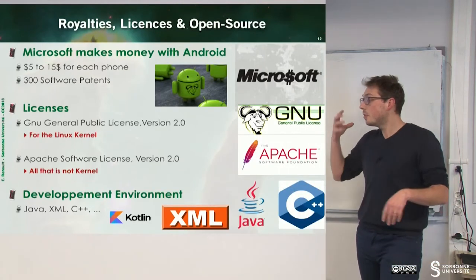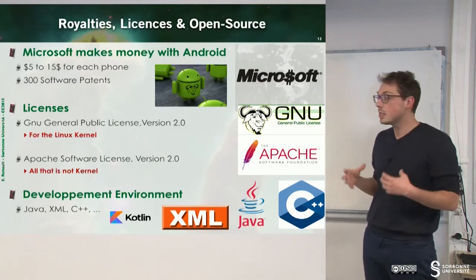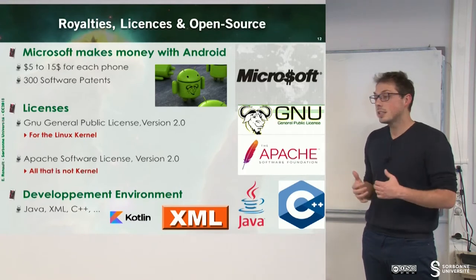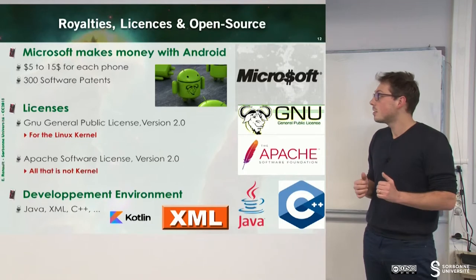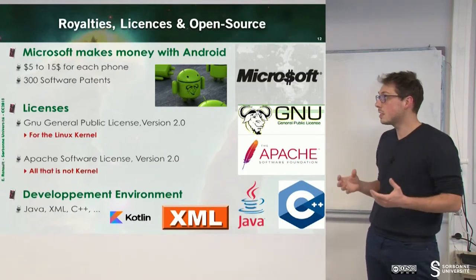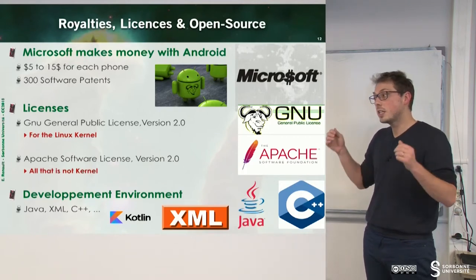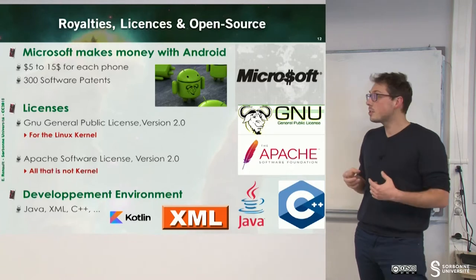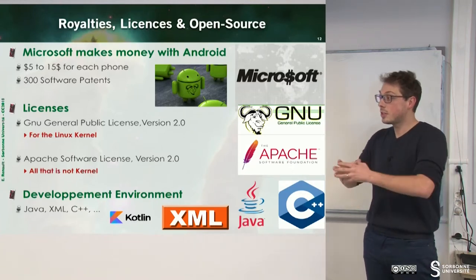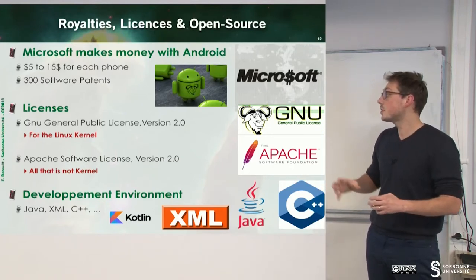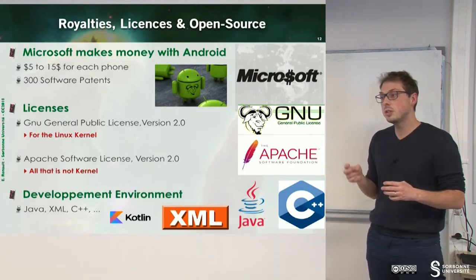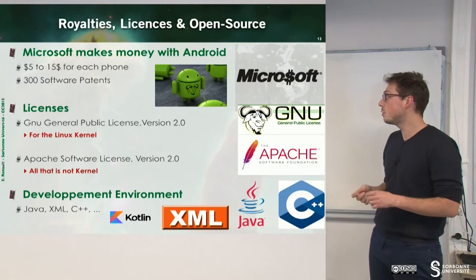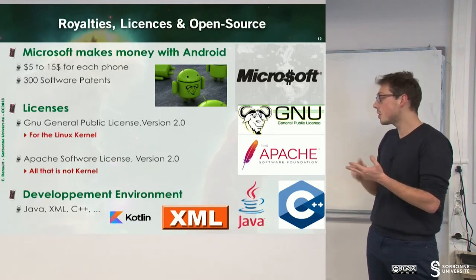Now that we've seen fragmentation, let's look at licensing and open source topics. Microsoft earns royalties on each Android device — it has patents and earns between $5 and $15 for each phone sold with Android. Android is built on Linux, so there is the GNU license. Part of Android is free and changeable, and there is also the Apache Software License version 2 for the Android framework. If you want to develop for Android, you have to use XML, C++, Kotlin, or Java.